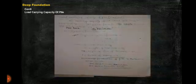First one is dynamic formula, Engineering formula: Q equal to WH by F into S plus C. Q means safe load in kg, W equals weight of hammer in kg, H equals height of fall of hammer in centimeter, F equals factor of safety. Generally, we take factor of safety equal to 6. S equals average penetration of pile in last n blows in centimeter. For drop hammer n equals 5, and for steam hammer n equals 25.